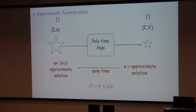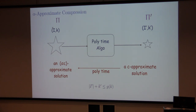We can change the definition slightly to get the definition of alpha-approximate compression, where the reduced instance is an instance of a different problem. For kernelization you want the reduced instance to also be an instance of the same problem, but for compression you don't require that.